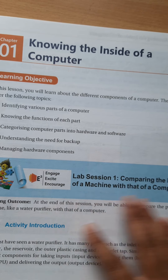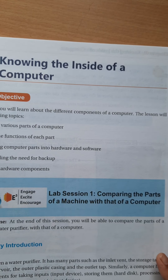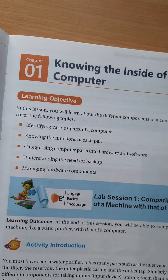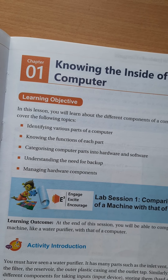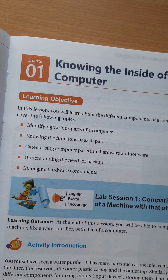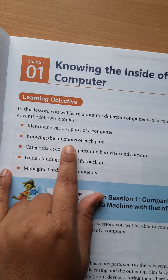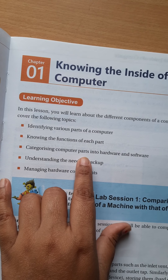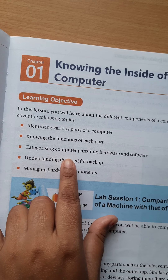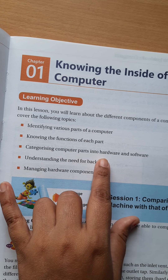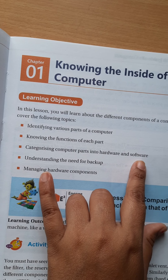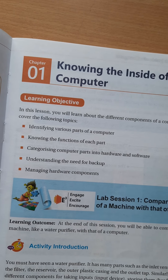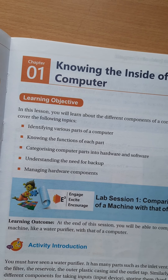Here are some learning objectives — what we are going to learn in this lesson. First, identifying various parts of a computer. Second, knowing the functions of each part. Third, categorizing computer parts into hardware and software — computer parts are categorized into two categories: hardware and software. Then, understanding the need for backup and managing hardware components.